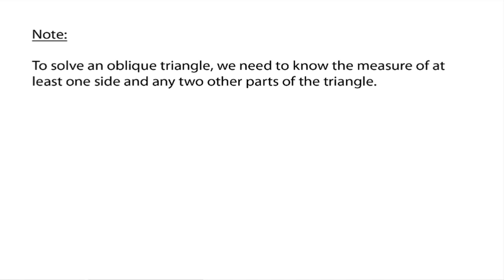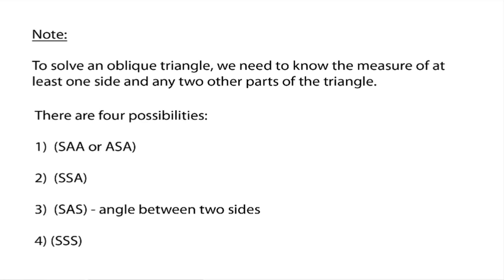Essentially we have four possibilities, abbreviated here. One possibility is side-angle-angle (SAA). Another is angle-side-angle (ASA). A third is knowing two sides in a row and then the next angle: side-side-angle (SSA). Or we might know a side, then an angle in between, then another side: side-angle-side (SAS). The fourth case is knowing all three sides but no angles: side-side-side (SSS).